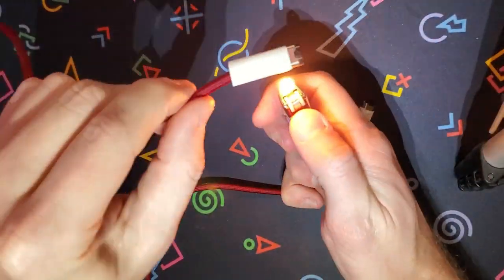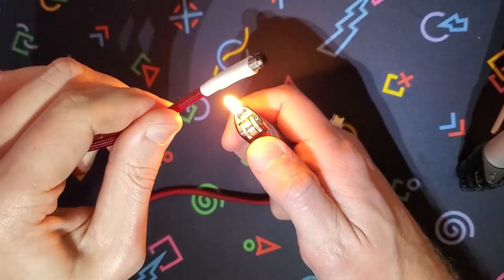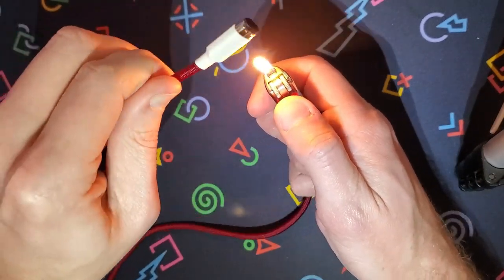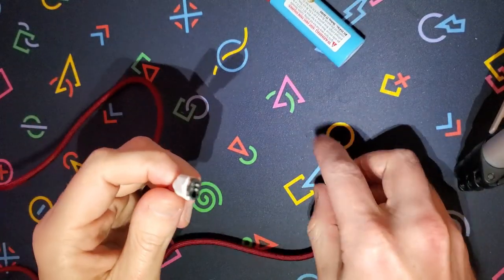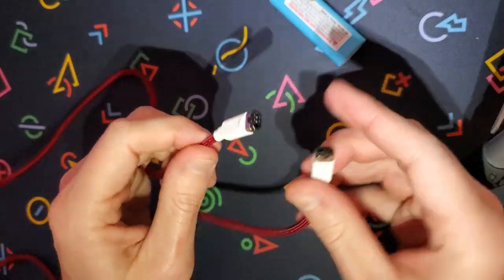Then just do the same thing on the other side. Slip it over, heat it up, shrink it down. I'm just testing the tip there to see how hot it got. But there you go.